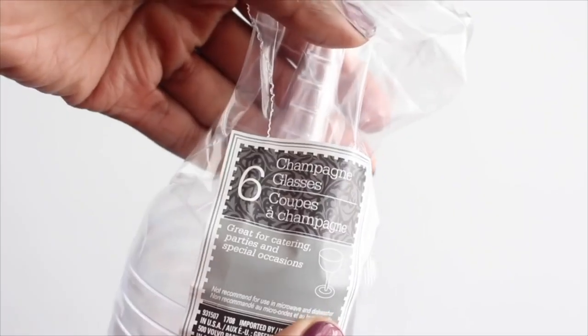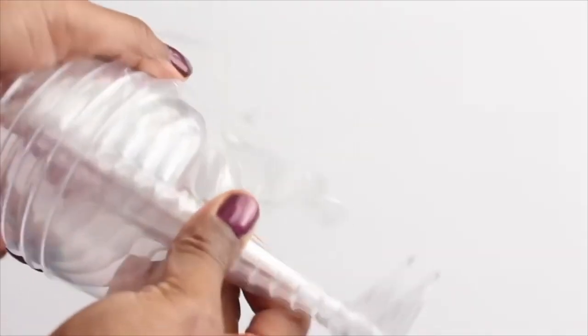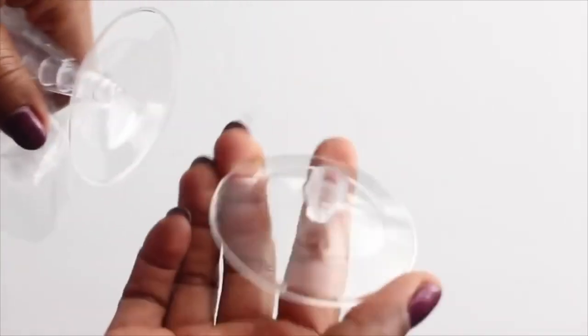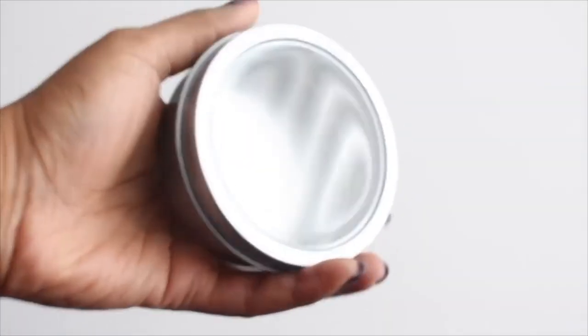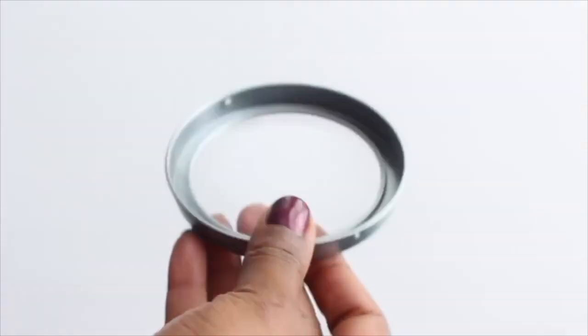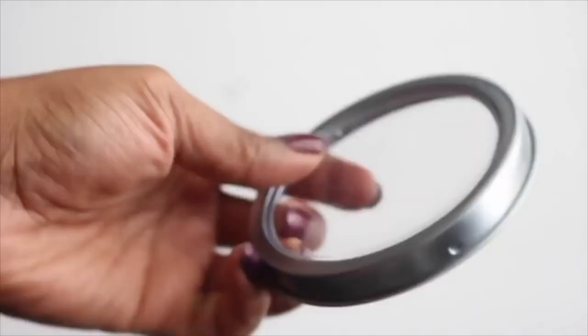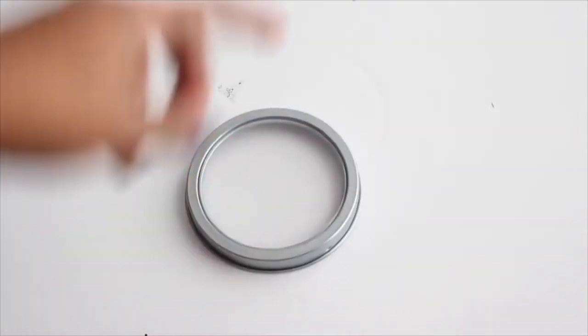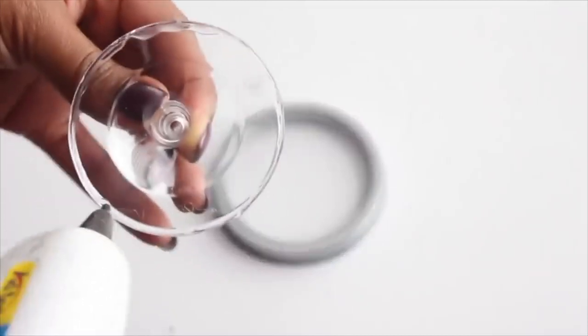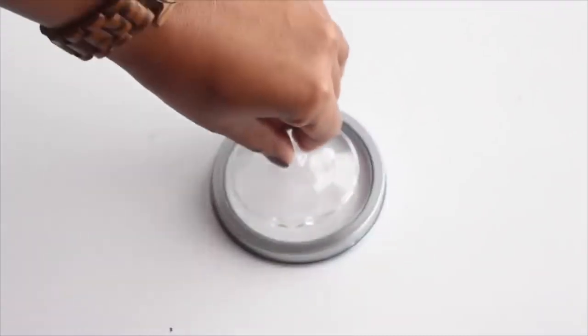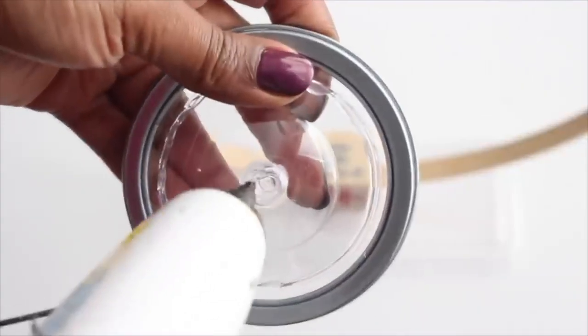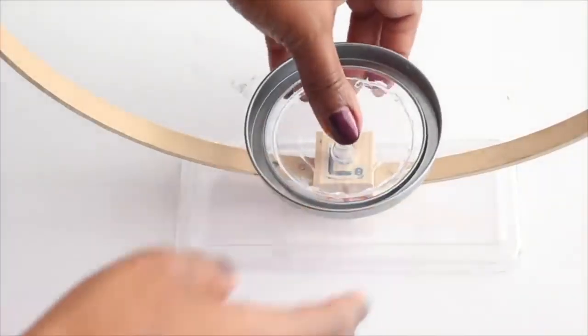Now I'm going to take off the base of one of the Dollar Tree plastic champagne glasses and the lid off of a Dollar Tree magnet tin jar. I'm going to take the lid and just place it down and hot glue the champagne glass base on top. Next I'm going to add a little bit of hot glue on the top and attach it to the block.